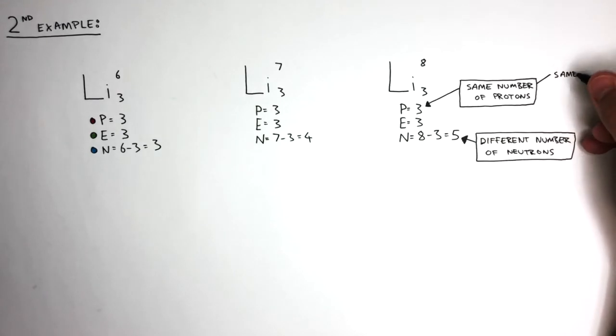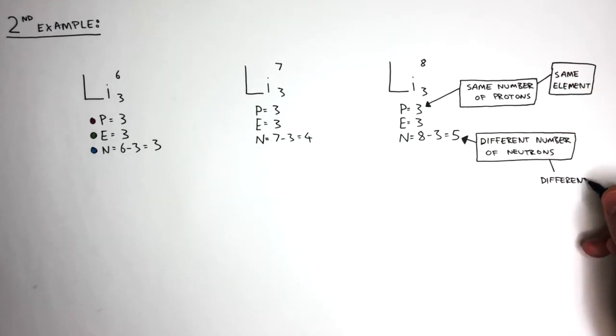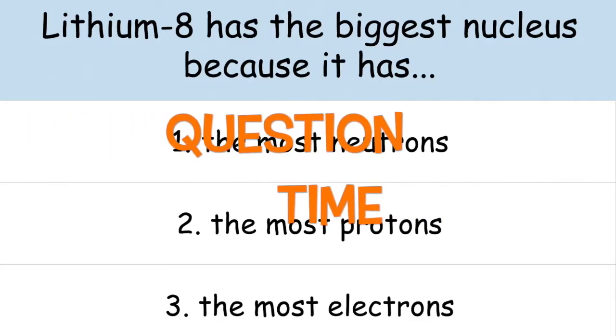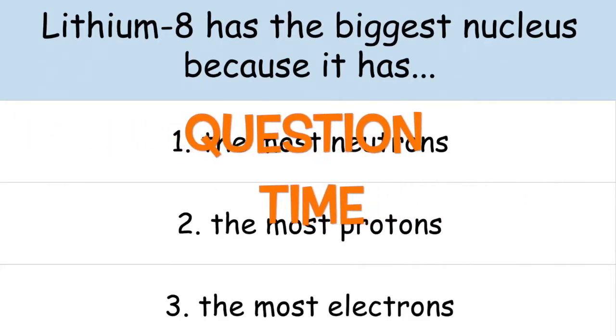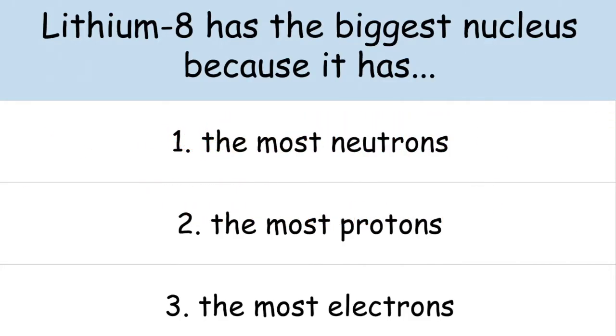Isotopes are always the same element. It's their different number of neutrons that makes them different atoms. Attempt these questions to check your understanding.